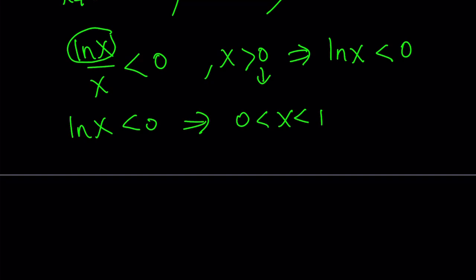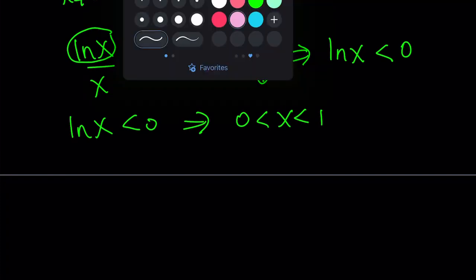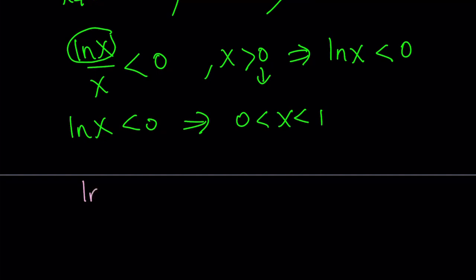At least we know that x needs to be less than 1 and greater than 0. So we're going to manipulate this expression a little bit. So we have ln x over x equals negative e.